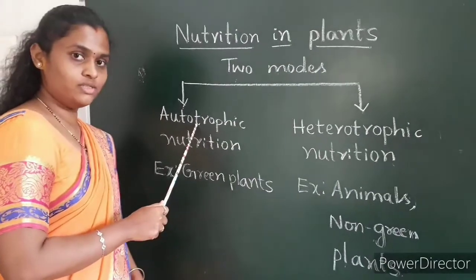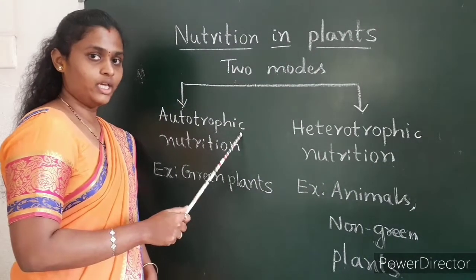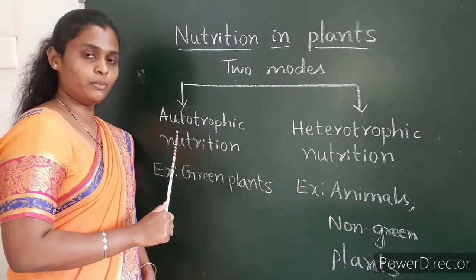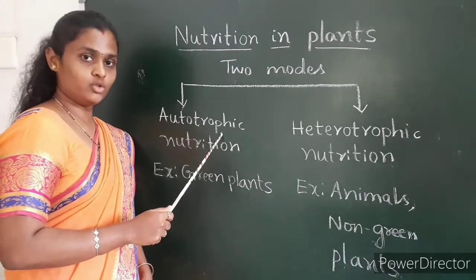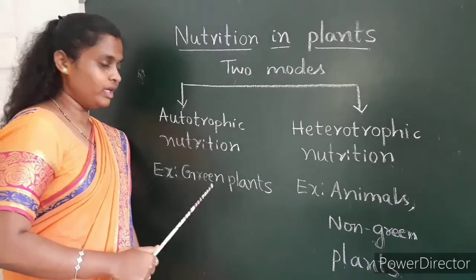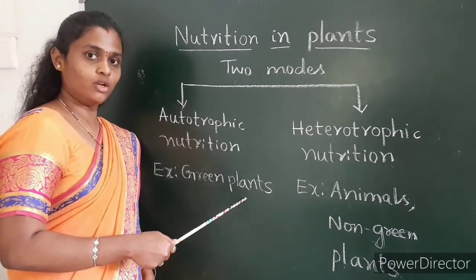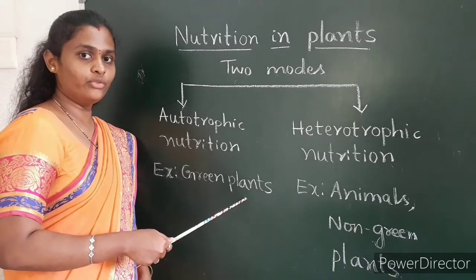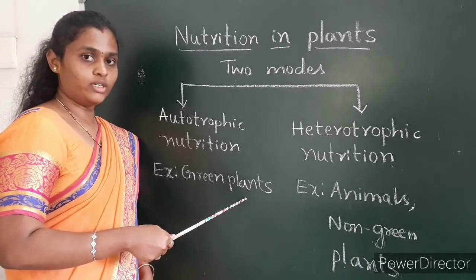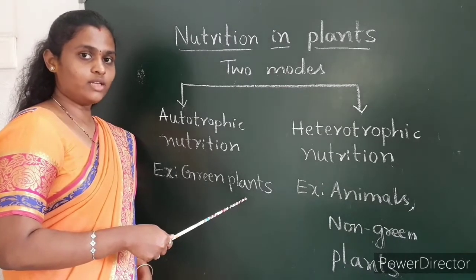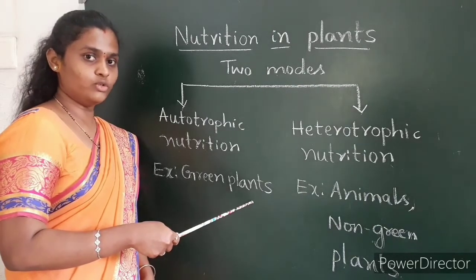The word 'auto' means self, and 'trophism' means feeding. The living organisms which prepare their own food we call them autotrophs. The example is green plants. Green plants prepare their own food with the help of sunlight, chlorophyll, water, and carbon dioxide. This process is termed as photosynthesis.